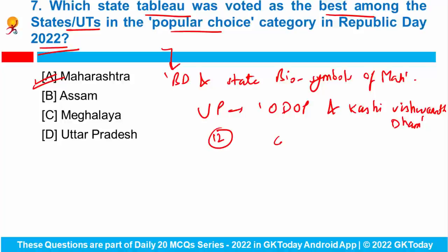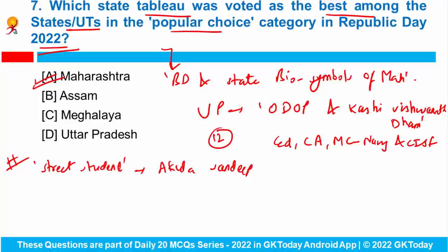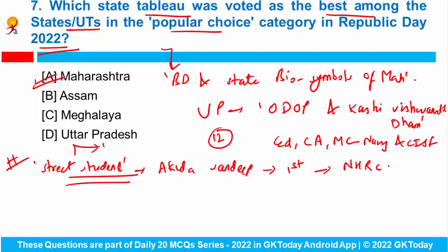Do remember that the Ministry of Education, Ministry of Civil Aviation, Marching Contingent of the Navy, and CISF were named winners in their respective categories. Also, a Telugu short film named Street Student by Akula Sandeep recently won the first prize in a competition organized by the National Human Rights Commission. This short film talks about the right to education. Can you tell me which article of the Indian Constitution gives us the right to education? Please answer in the comments.